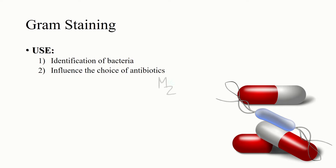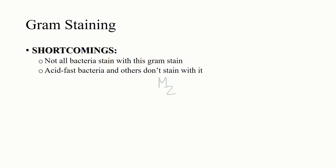The gram stain is useful in two ways: number one, in the identification of many bacteria, and number two, in influencing the choice of antibiotic, because in general gram positive bacteria are more susceptible to penicillin G than gram negative bacteria. However, not all bacteria stain with the gram stain — for example, acid-fast bacteria like Mycobacterium tuberculosis have too much lipid in their cell walls so the dye cannot penetrate.